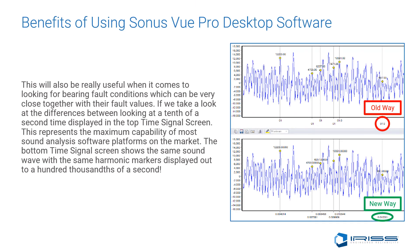This is also useful when looking for bearing fault conditions, which can have very close fault values. Comparing a tenth of a second display — which represents the maximum capacity of most sound analysis software platforms on the market today — against the Sonus Vue Pro's display of the same sound wave out to a hundredth of a thousandth of a second, demonstrates its superior resolution for fault detection.